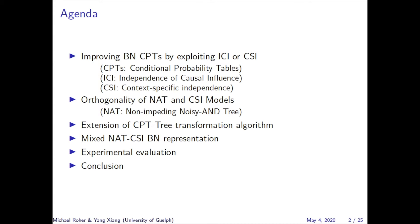The agenda for the presentation is as follows. First, we will discuss how Bayesian network conditional probability tables can be improved by exploiting ICI or CSI. Second, we empirically demonstrate the orthogonality of NAT and CSI models. Third, we discuss our extensions to the CPT tree transformation algorithm. Fourth, we discuss the mixed NAT CSI-BN representation, our rationale for the representation, and a method to support inference on the MNCBN.